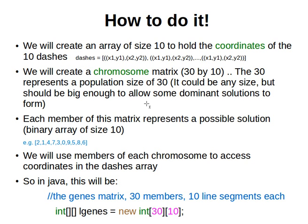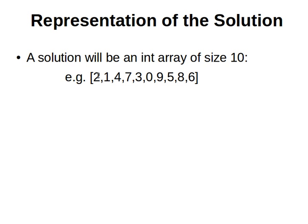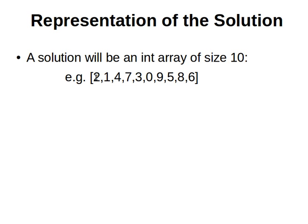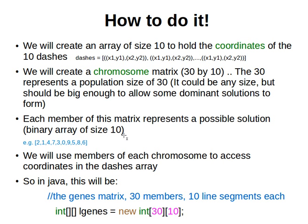As we explained before when we did genetic algorithms for binary representation, we will create an array of size 10 to hold the coordinates of the 10 dashes. We will call that array dashes, so it will have the coordinates x1, y1, x2, y2 of each dash. We will use these numbers as the index of the dash in the dashes array. So when we say 2, that means the dash at index number 2.